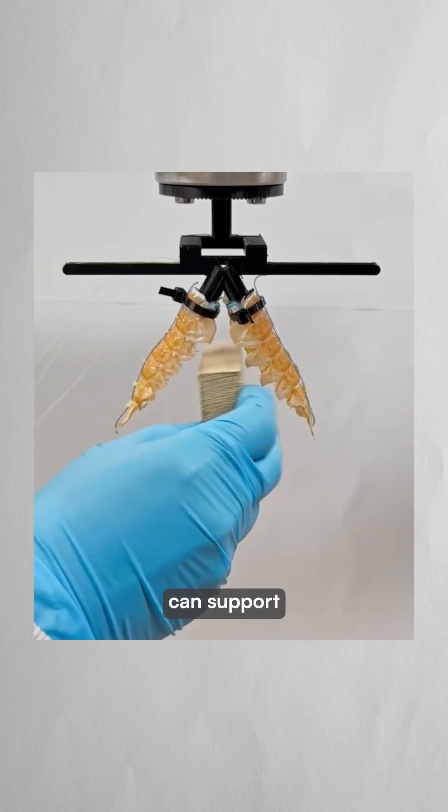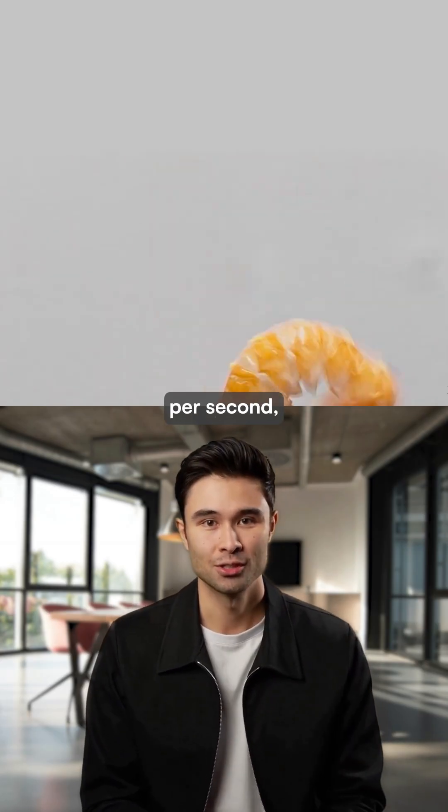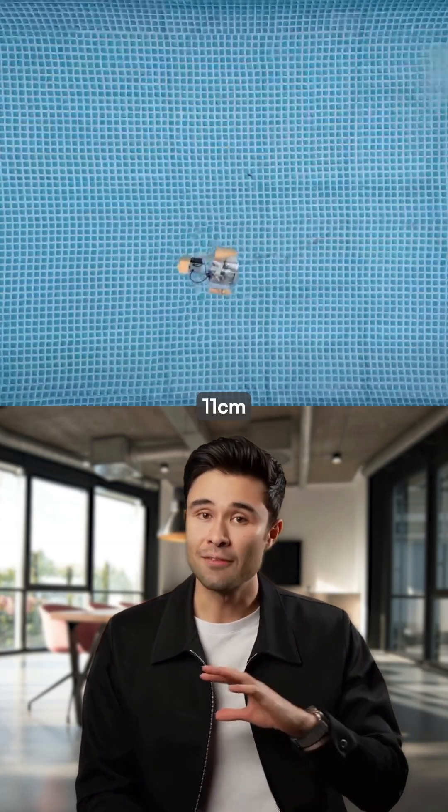Their exoskeleton actuators can support payloads up to 680 grams, bend at speeds of 8 cycles per second, and power a swimming robot reaching 11 centimeters per second.